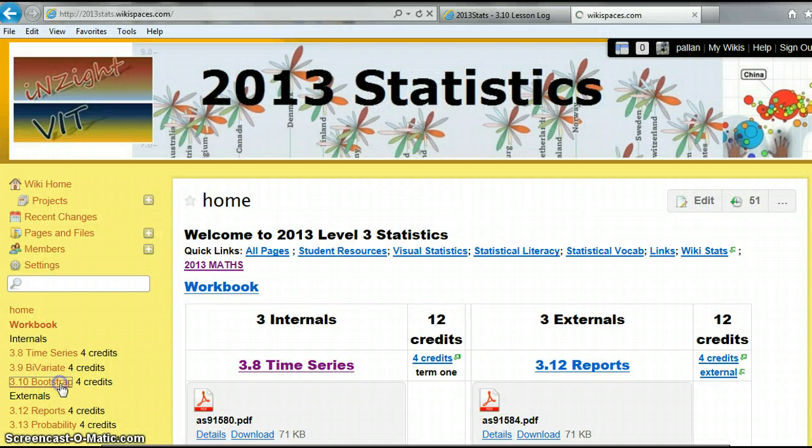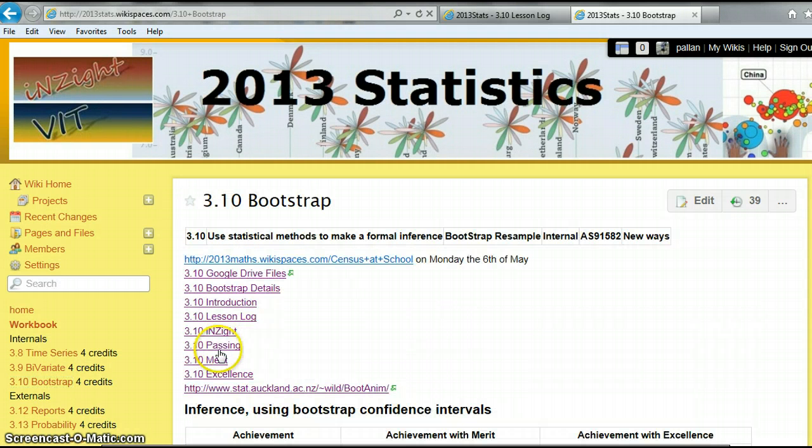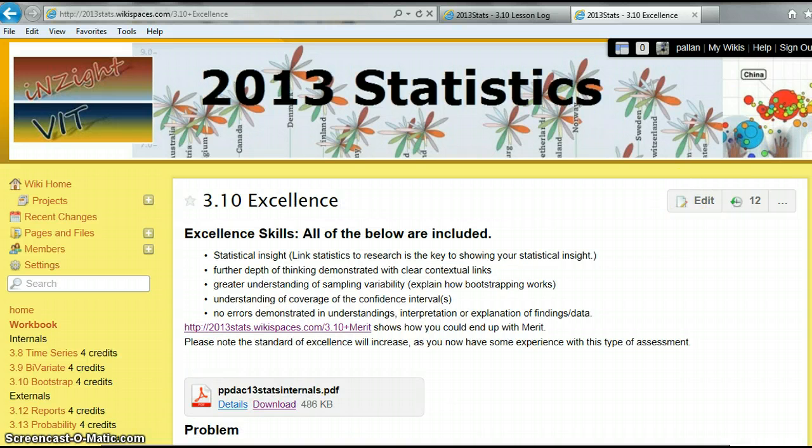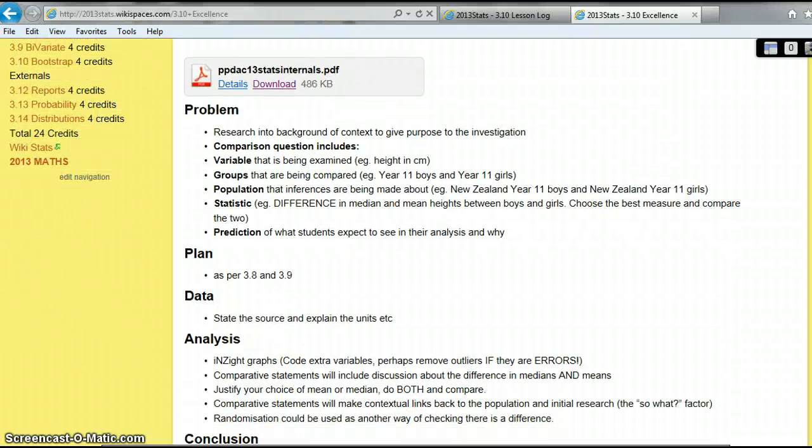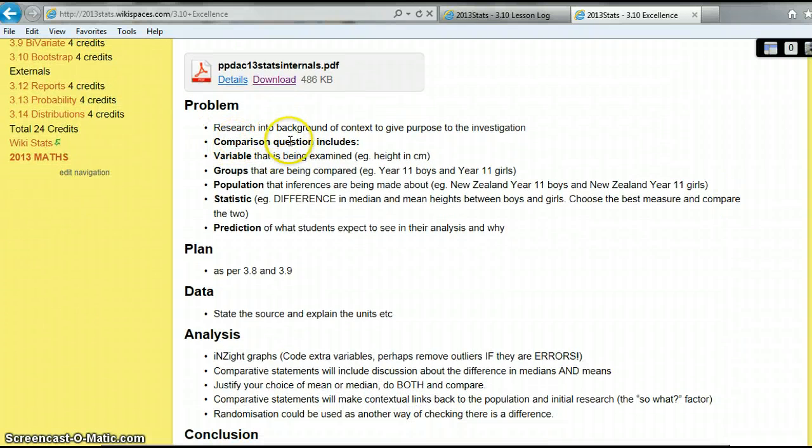And I'll just show you the tick list. So, we go bootstrap. And the more in-depth checklist is actually at excellence page. And if we scroll down, you can see comparison question includes the variable, the groups, the population, the statistic. That bit there's achieved. For the excellence and merit, you're doing research and making more of a purpose as to why you're doing it. You're not just doing it. And a prediction of what you might see and why. So, that's your merit excellence part. But for achieved, you need that language.